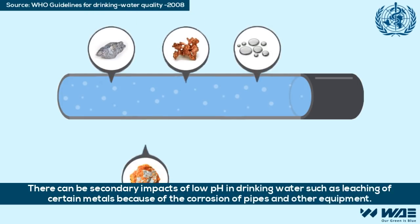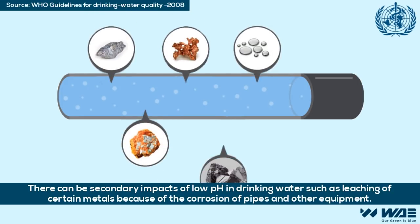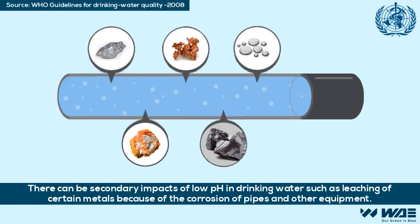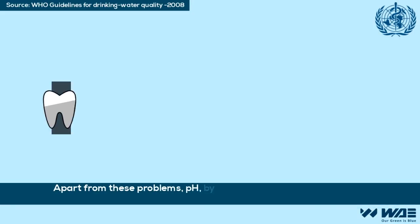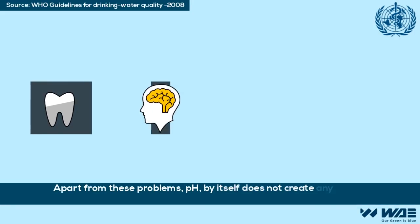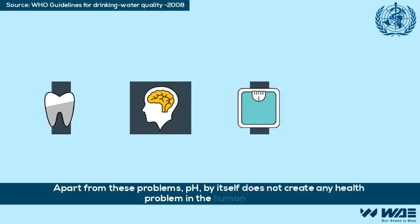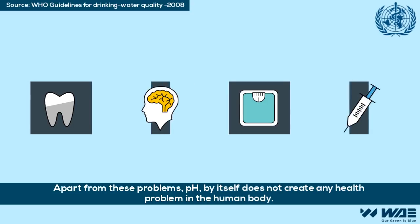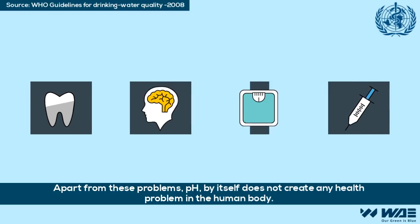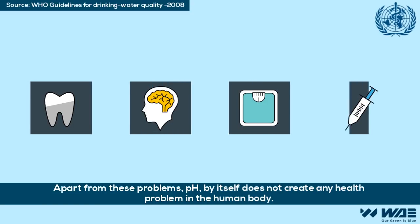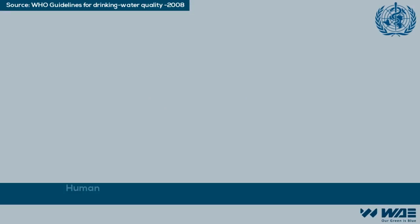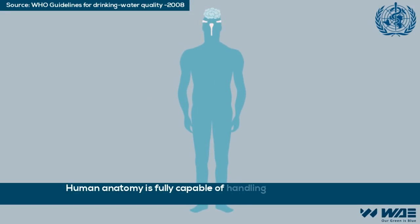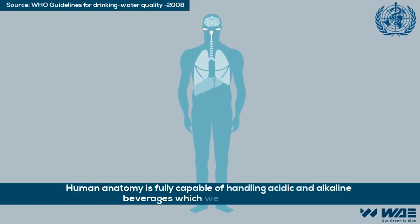Such secondary impacts include leaching of certain metals because of the corrosion of pipes and other equipment. Apart from these problems, pH by itself does not create any health problem in the human body. Human anatomy is fully capable of handling acidic and alkaline beverages which we normally intake.